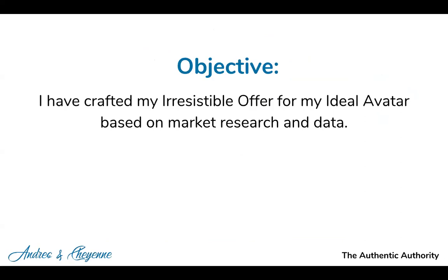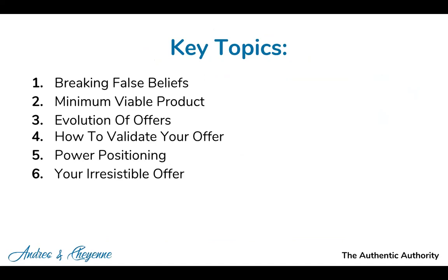The main objective of this lesson: I have crafted my irresistible offer for my ideal avatar based on market research and data. By the end of this lesson you'll be able to find who the ideal avatar is and the perfect offer for them. Key topics: one — breaking false beliefs, two — minimum viable product, three — evolution of offers, four — how to validate your offer, five — power positioning, and six — your irresistible offer.